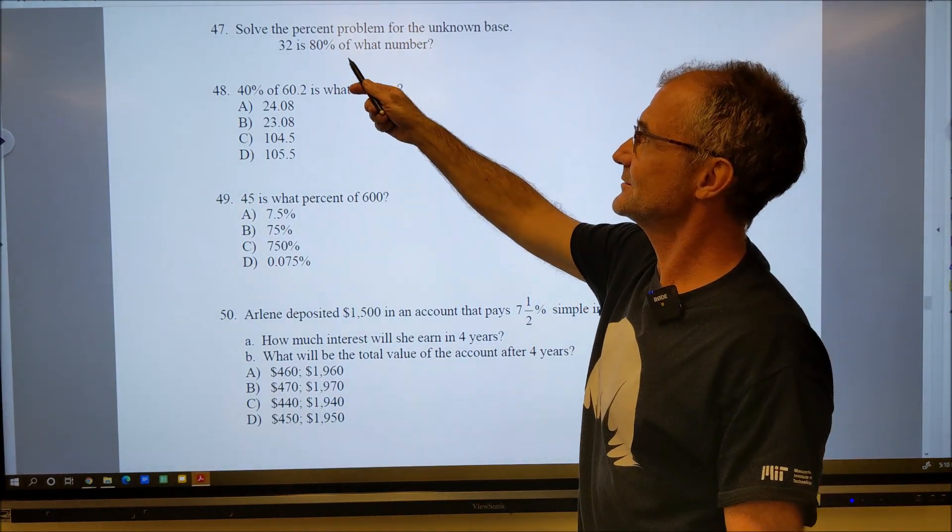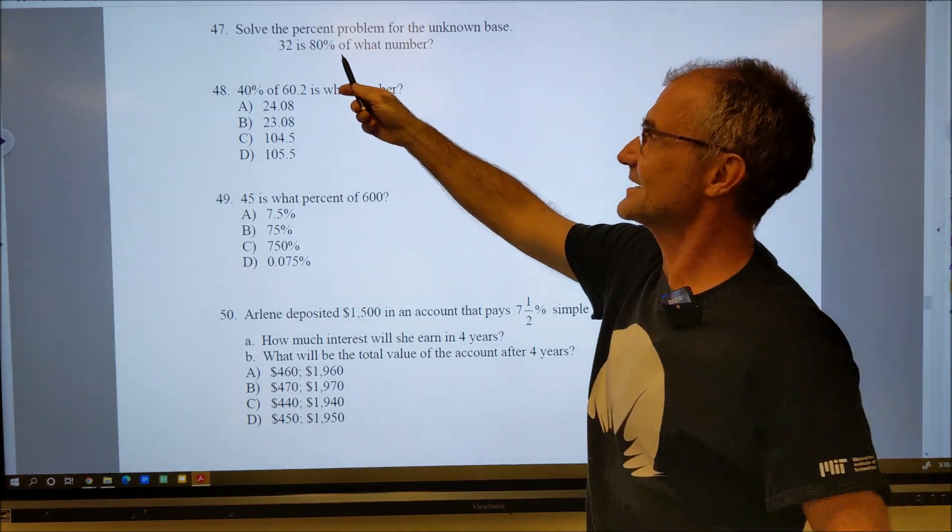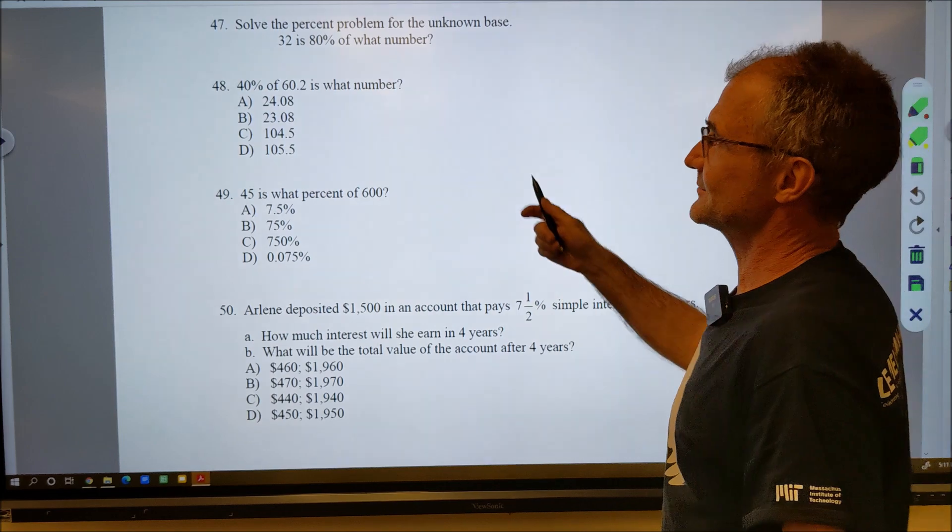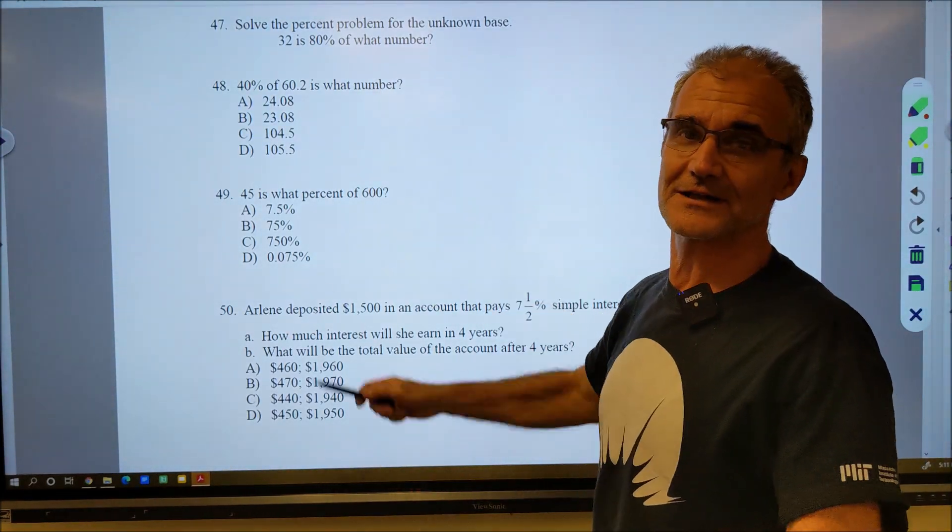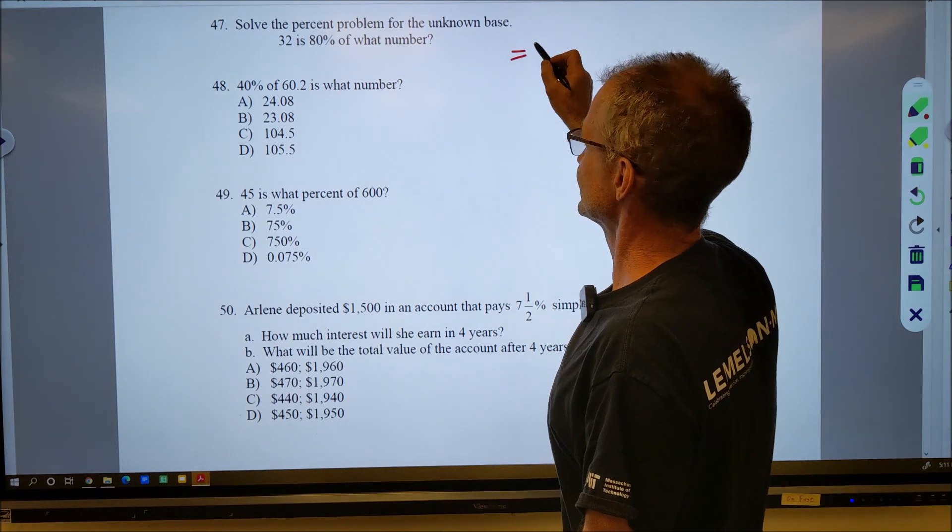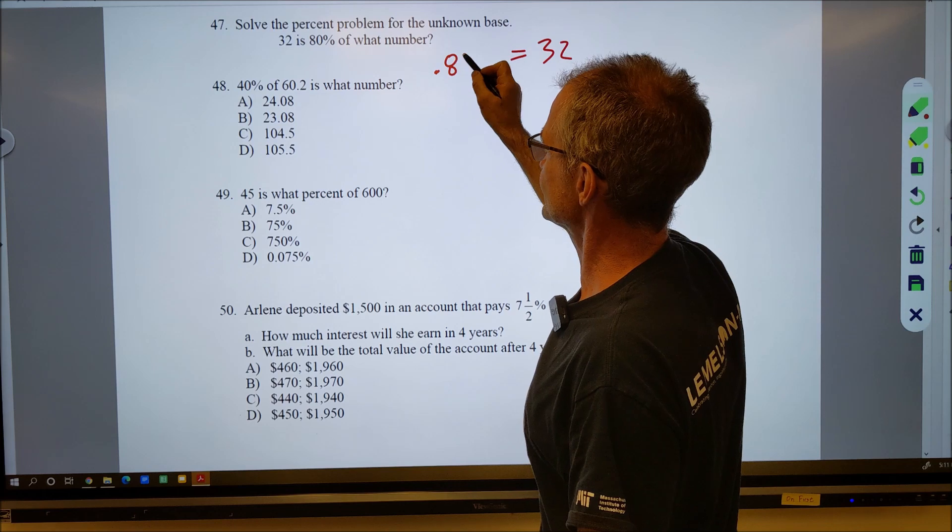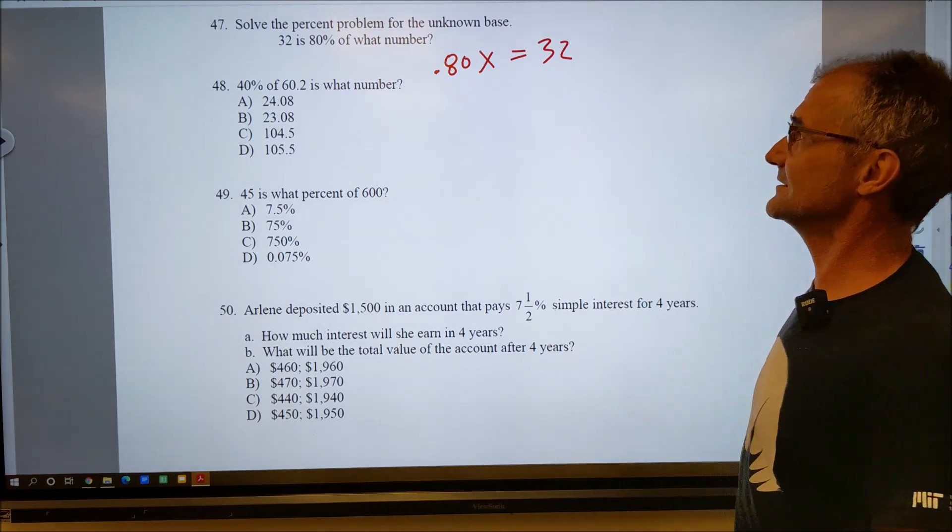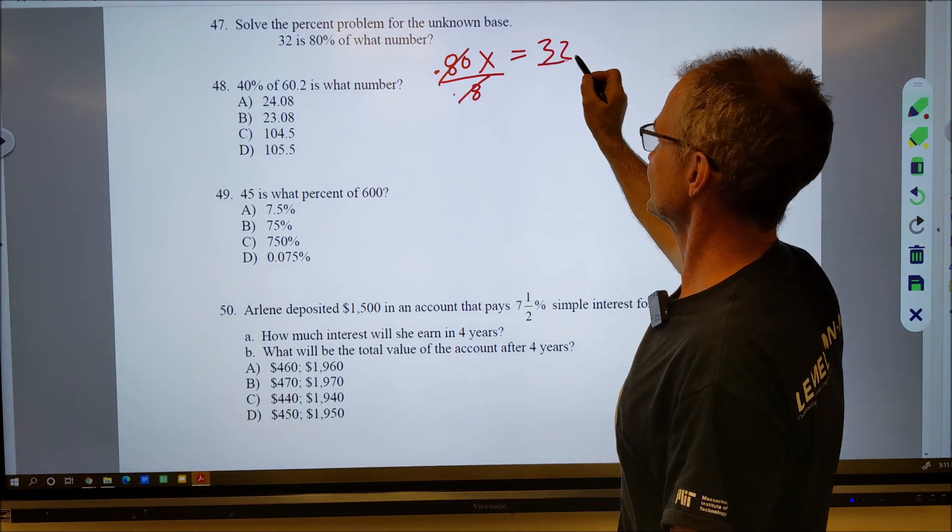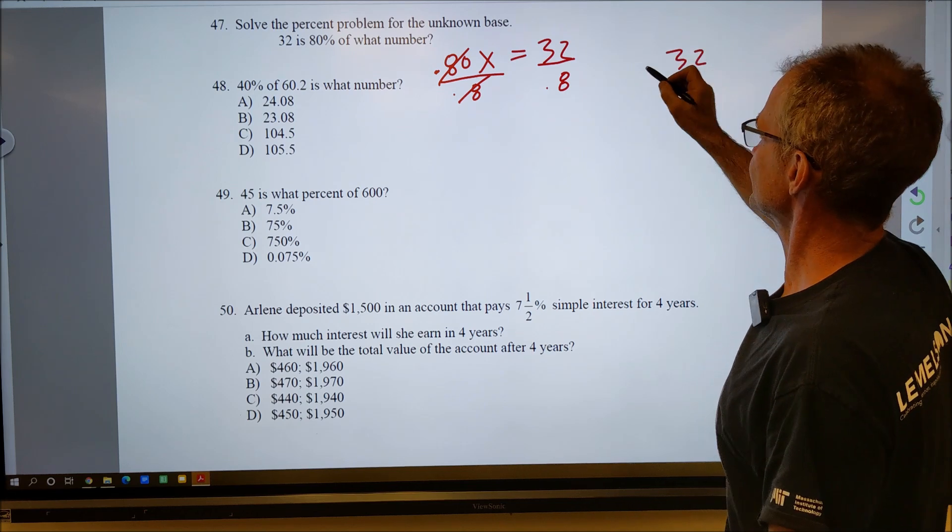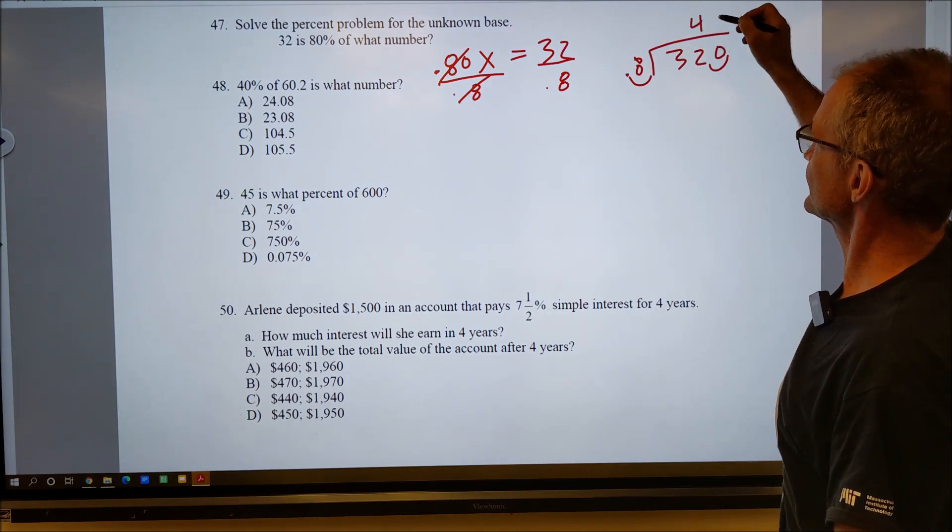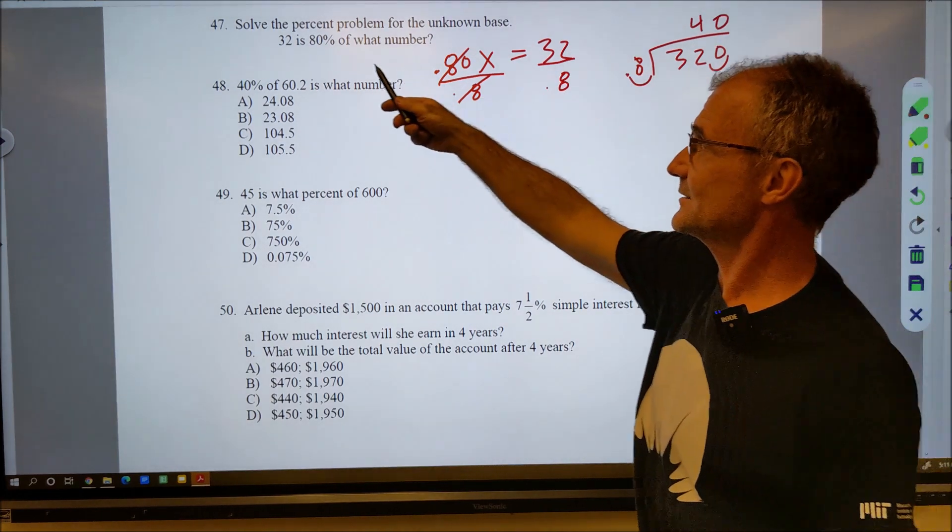Number 47: 32 is 80% of what number? So that means 32 is actually my answer. So what I'm saying is 80%, I'll convert that to a decimal, 80% of what number is 32? It's a little bit of a tricky one. So the number has to be bigger than 32. I divide both sides by 0.8, I'll get x by itself. Divide this side by 0.8. So I have 32 divided by 0.8. I'm going to move that decimal over once, over here once. 8 goes into 32 four times. 40. So 40 times 80% is 32.